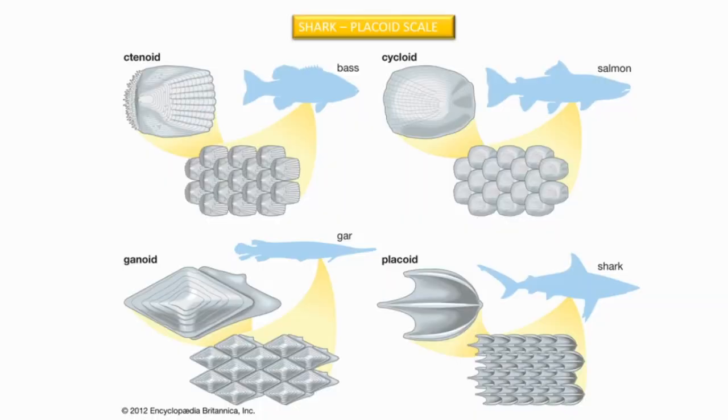The types of scales are: ctenoid scales, cycloid scales, ganoid scales, and placoid scales. I will show you images of all these types of scales at the beginning of the video. The demonstration you are going to see is done by Mrs. Ruby Joy, who was also a former teacher of our department.